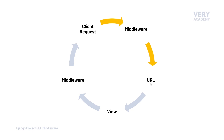Once we're finished with the middleware, the request will be processed by the URL functionality. What Django is trying to do here is match the client request to a view — building a way of identifying that particular request to a particular piece of functionality the application provides. The URL is going to route that request to a particular view, which will then perform some sort of action. When developing a Django application, it doesn't matter if you create the view or the URL first, but both must work together.